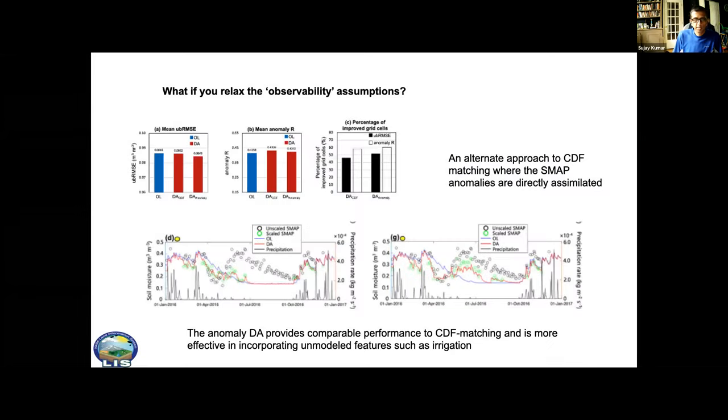We tried a simple experiment where we relaxed the observability assumption. We took the case of SMAP as the soil moisture. We assume that there are biases in the mean but let's say we ignore the biases in the higher moments like standard deviation and kurtosis. Instead of using CDF matching we just simply accept the anomalies from SMAP and then conduct an assimilation experiment.